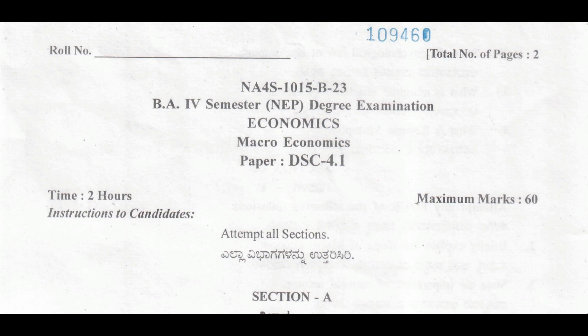This is the economics subject paper. The paper title is Microeconomics, paper code is DSE 4.1. It is a NEP paper, so the maximum marks is 60 for this microeconomics paper and the duration would be 2 hours. This is the BA fourth semester economics subject microeconomics paper.